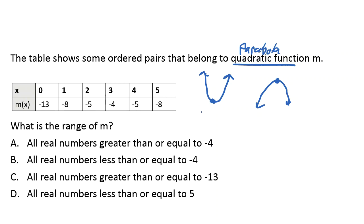If we can find that turning point, we can find the range. Looking at the y-values: negative 13 to negative 8 — going up; negative 8 to negative 5 — going up; negative 5 to negative 4 — going up; negative 4 to negative 5 — going back down; negative 5 to negative 8 — going back down. So negative 4 is our turning point, the point where it switches from going up to going down, making an inverted U shape.